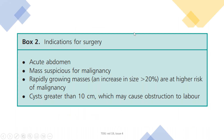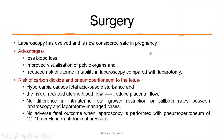The indications for surgery are: symptoms related to acute abdomen, a mass suspicious for malignancy, a rapidly growing mass at high risk of malignancy, or a cyst more than 10 cm that may cause obstruction to labor.